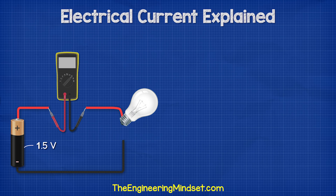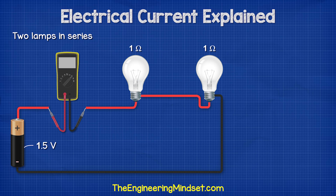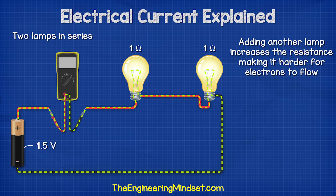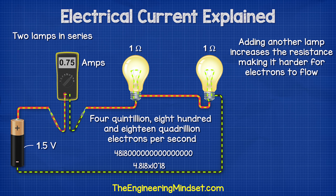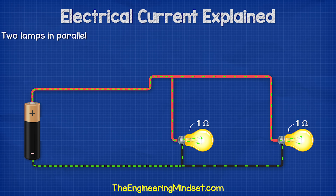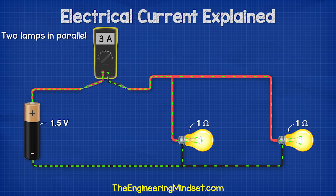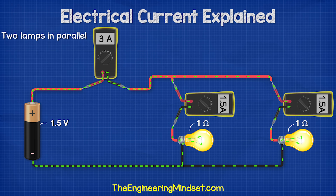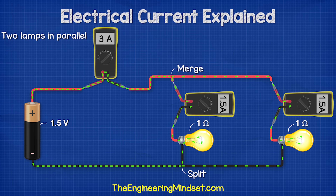If we add another lamp to the circuit connected in series, and the lamp also has a resistance of 1 ohm, then we're adding more resistance to the circuit, so it's now harder for the electrons to flow through and we see a reduction in current — in this case, we get a reading of 0.75 amps, which means 4 quintillion 818 quadrillion electrons are flowing. If we now connect the circuit with two lamps in parallel, both with a resistance of 1 ohm, and connect this circuit to a battery of 1.5 volts, then in the main wire from and to the battery we get 3 amps. But on the branch of each lamp, we get 1.5 amps, because the path of the electrons splits so they are shared between the two lamps. The path then merges again, so we get the combined total circuit current of 3 amps.